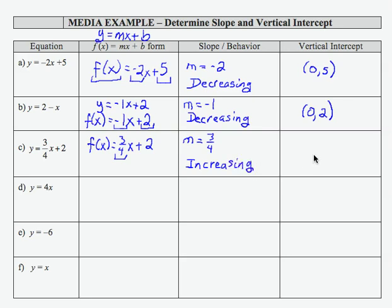To find the vertical intercept, I identify the value in the b slot, and that's (0, 2). Notice that's also the same result I get if I input 0 into the function. f(0) would be 0 + 2.